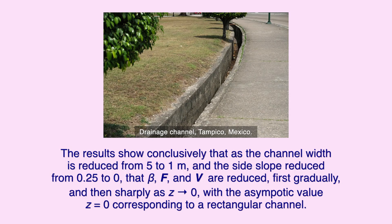The results show conclusively that as the channel width is reduced from 5 to 1 meter, and the side slope reduced from 0.25 to 0, that beta, F, and V are reduced — first gradually, and then sharply — as z tends to 0, with the asymptotic z equals 0 corresponding to a rectangular channel.